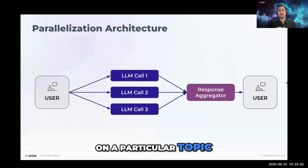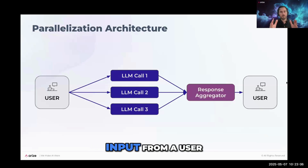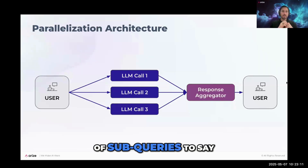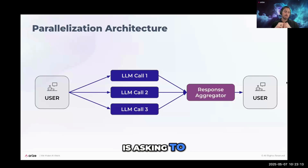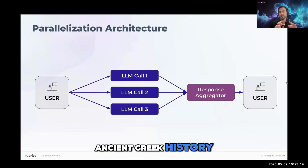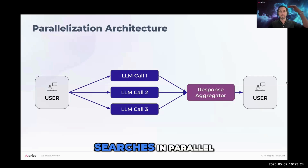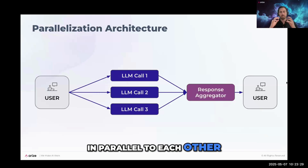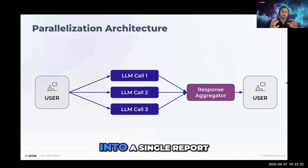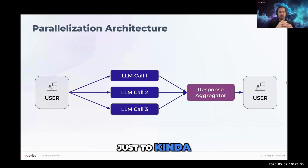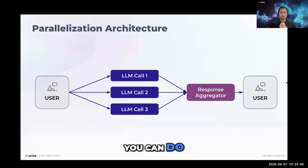The parallelization architecture takes an input and runs multiple skills or steps in parallel simultaneously, then aggregates the responses. A common example is a deep research agent: a user asks to research ancient Greece, the system decomposes that into sub-queries — ancient Greek history, geography, and culture — runs all three searches in parallel, collects each response, and aggregates them into a single report. This speeds up your agent significantly.